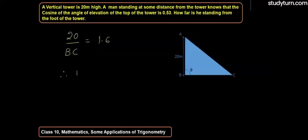Now let us solve for the value of BC, that is the base, the distance from the foot of the tower to the man.